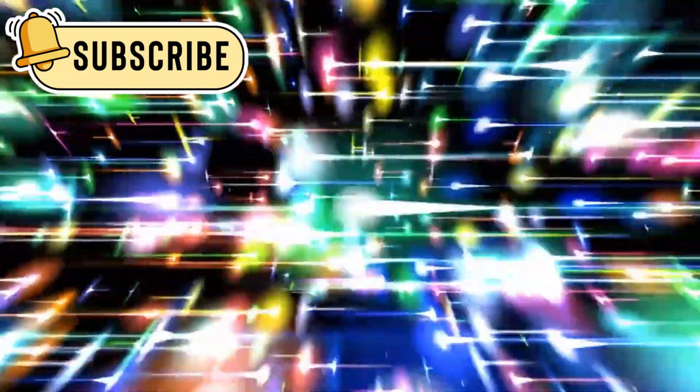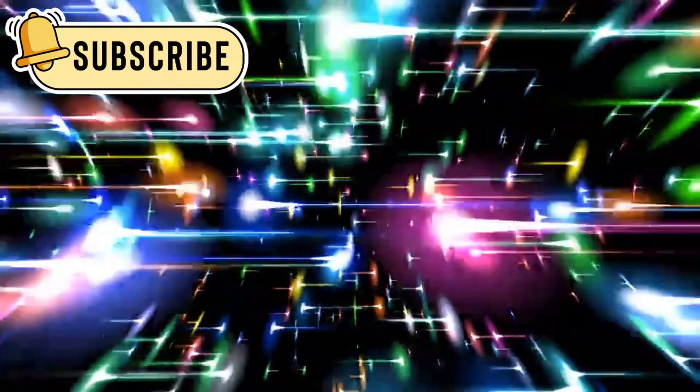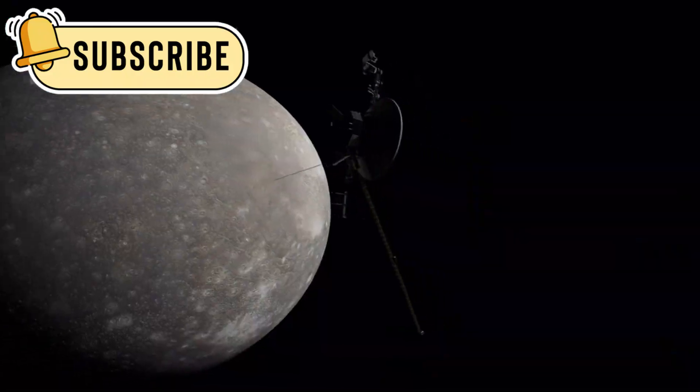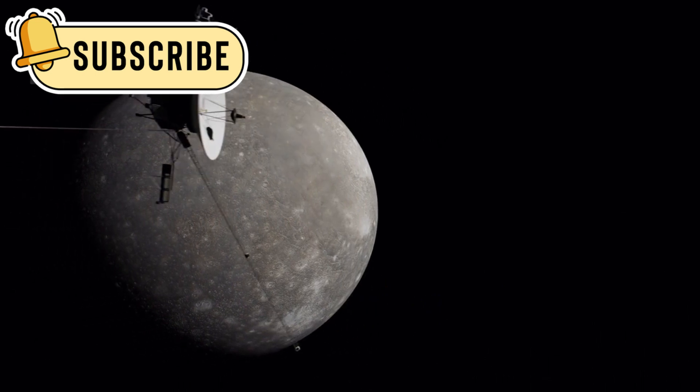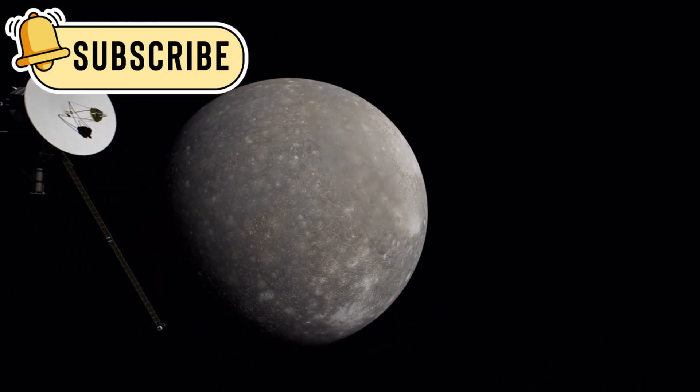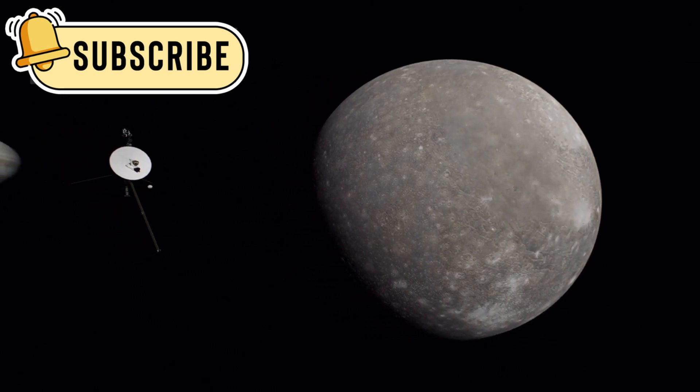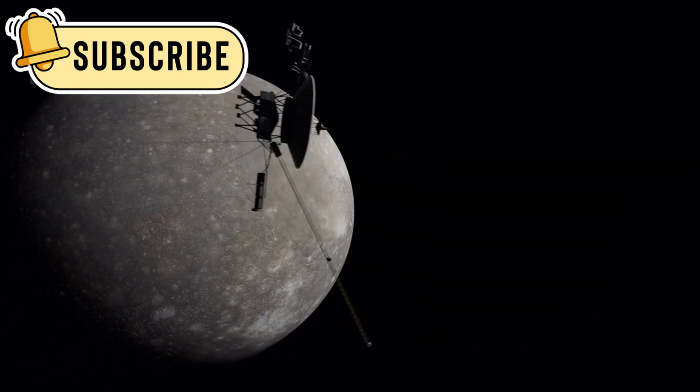Beyond our solar system lies the Oort Cloud, a vast region filled with comet-like objects, held together by the Sun's gravity. This region stretches to the nearest star, and while Voyager 1 is still moving slowly toward it, its entry into interstellar space began when it crossed the heliopause, the boundary that separates our solar system from interstellar space.